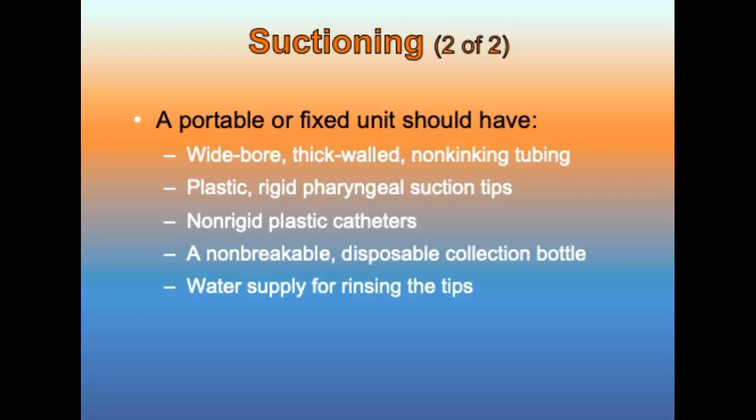A suction catheter is a hollow cylindrical device used to remove fluids from the airway. A tonsil tip catheter is the best kind for suctioning infants and children, and tips with curved contour allow for easy, rapid placement in the oropharynx. French or whistle tip catheters are soft plastic non-rigid catheters used to suction the nose and liquid secretions in the back of the mouth, or in situations where a rigid catheter cannot be used, such as a patient with a stoma or clenched teeth.